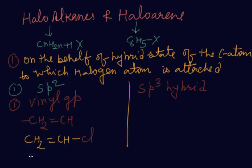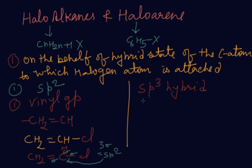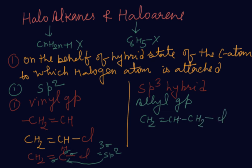Now see the hybrid state of this carbon atom: CH₂=C(H)–Cl. Count the sigma bonds on the carbon bearing chlorine: one sigma, two sigma, three sigma. Three sigma bonds means this carbon is SP2 hybrid. Vice versa, for SP3 hybrid, consider the allyl group: CH₂=CH–CH₂–. Here the halogen is attached next to the double bond carbon atom. This group is called allyl, and when chlorine is attached, it is called allyl chloride.